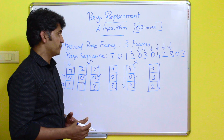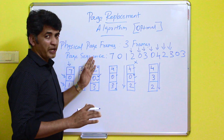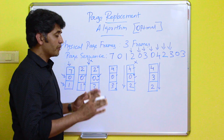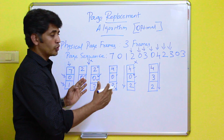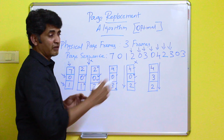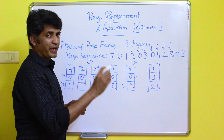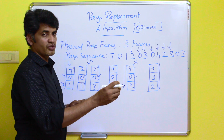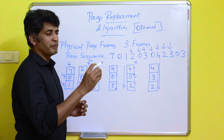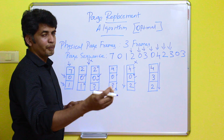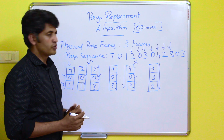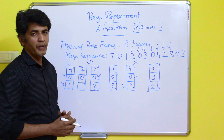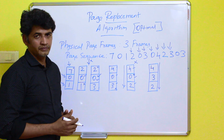This is how the Optimal Page Replacement Algorithm works. The key principle is: the page not used for the longest period of time is identified by the operating system and replaced by the newer page required for process execution. This concludes the optimal page replacement algorithm.